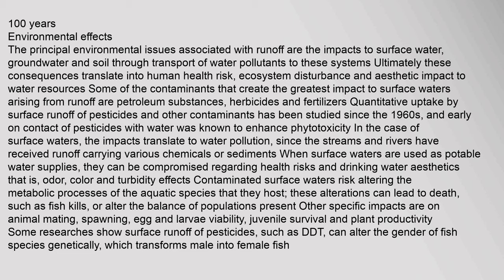Drinking water can be compromised regarding odor, color, and turbidity effects. Contaminated surface waters risk altering the metabolic processes of the aquatic species they host; these alterations can lead to death, such as fish kills, or alter the balance of populations. Other specific impacts include effects on animal mating, spawning, egg and larva viability, juvenile survival, and plant productivity. Some research shows surface runoff of pesticides such as DDT can alter the gender of fish species genetically, transforming male into female fish.